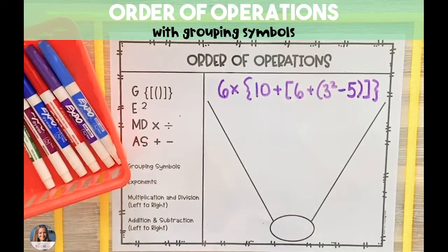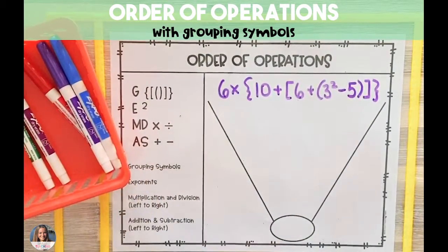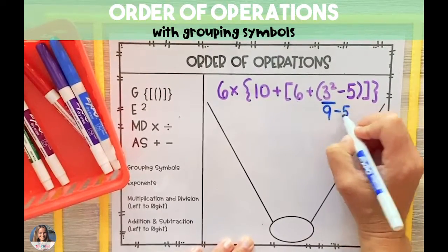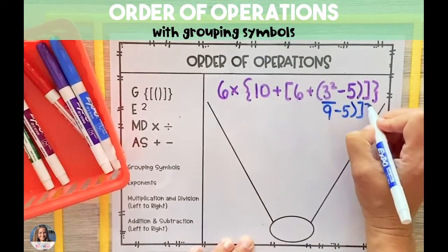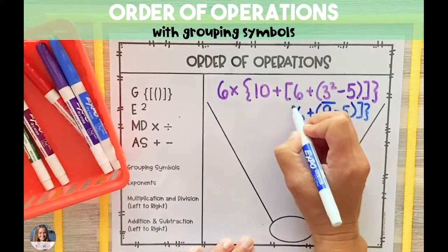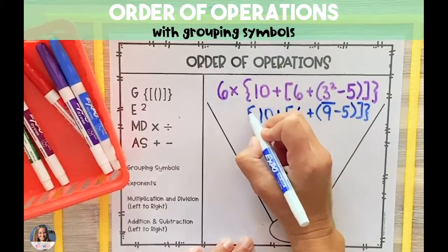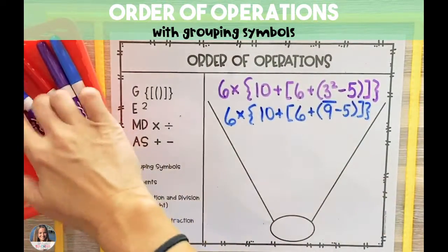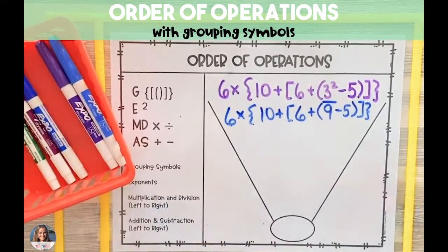The third and final grouping symbol that we're going to look at is braces. We're going to work our way from the inside out with parentheses. And since there are two operations inside the parentheses, we're going to follow the order inside there and solve the exponent. Then we'll bring down the rest of the problem and solve the remaining operation inside the parentheses, which is 9 minus 5.